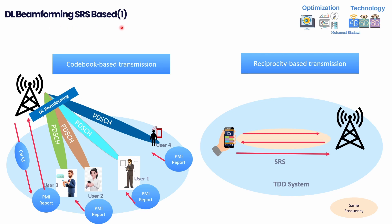Moving forward to the third feature — Downlink Beamforming based on SRS. Currently, the majority of networks use CSI-RS for downlink beamforming: the gNB transmits CSI-RS, users measure it and report PMI including rank indication, and the gNB uses this feedback to calculate beamforming weights. However, in TDD systems, channel reciprocity means uplink and downlink share the same frequency, so SRS can be used to estimate the downlink channel and potentially improve beamforming accuracy.